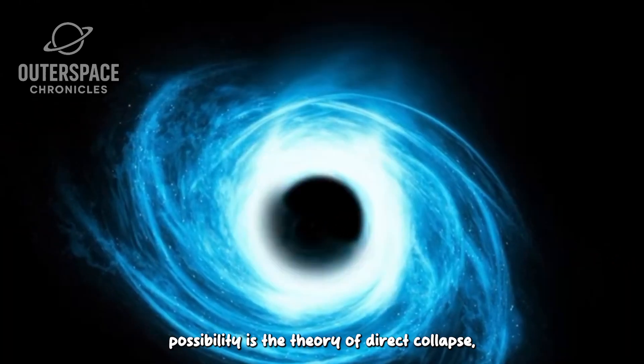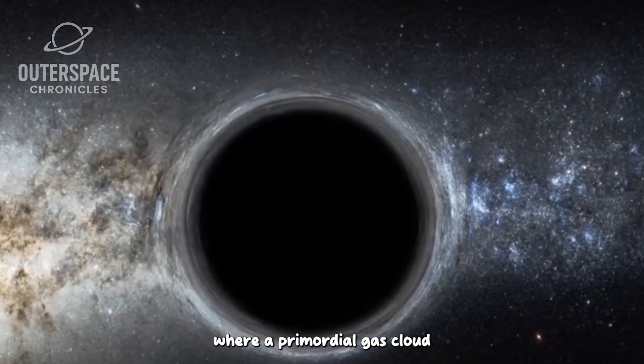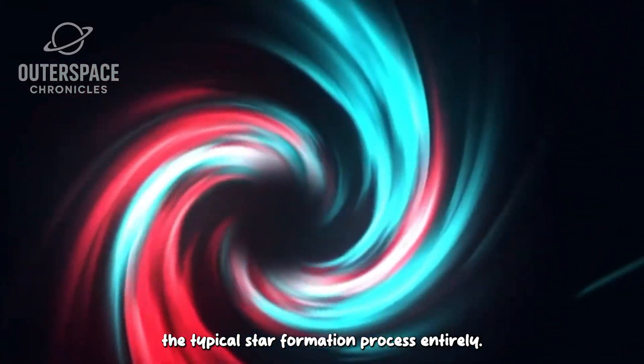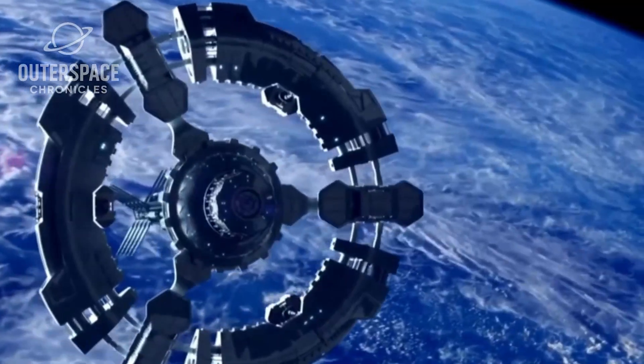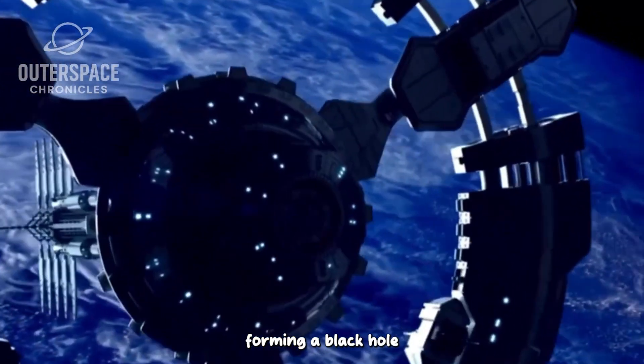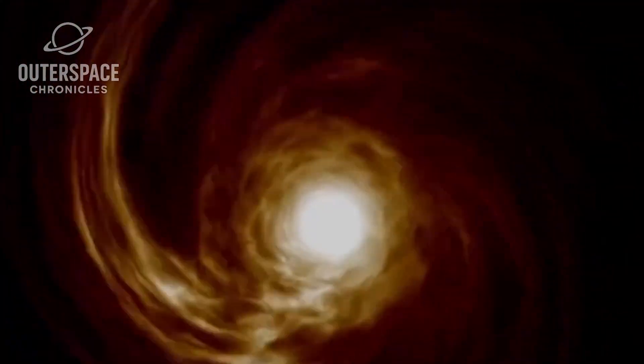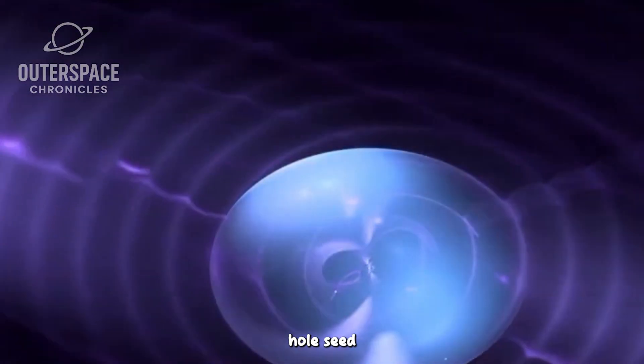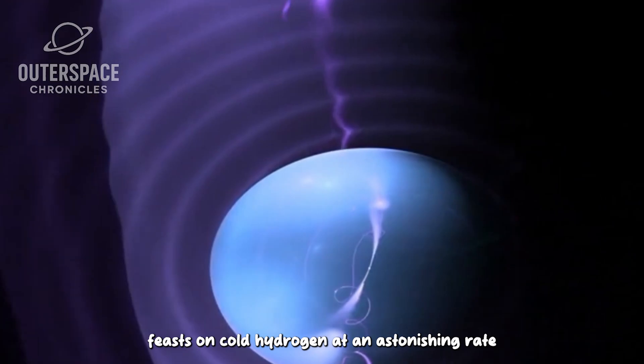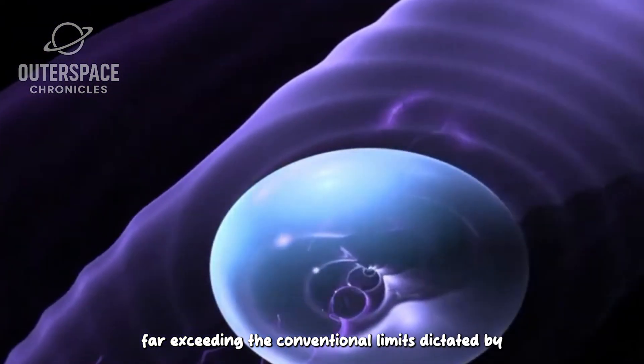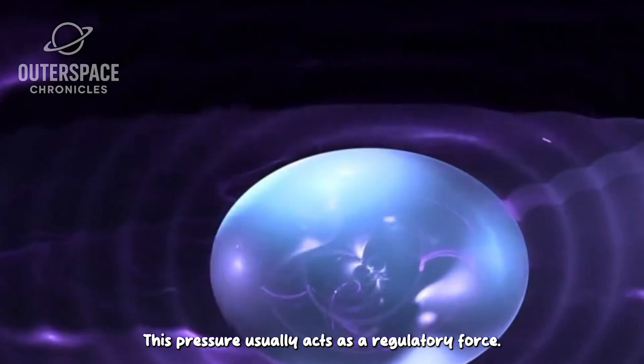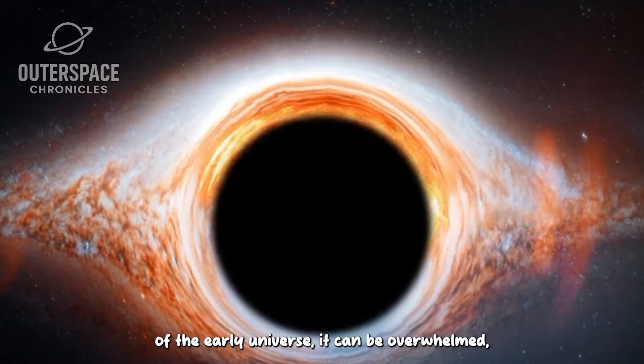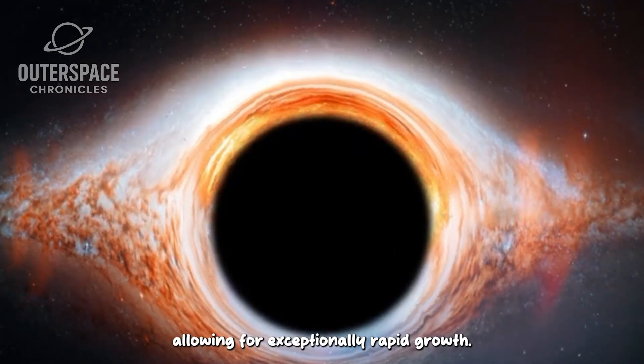One intriguing possibility is the theory of direct collapse, where a primordial gas cloud, with a staggering mass of around 10 million suns, bypasses the typical star formation process entirely. Instead, it quickly collapses under its own gravity, forming a black hole seed in a singular, rapid event. Alternatively, there's the concept of super-Eddington accretion, where a smaller black hole seed feasts on cold hydrogen at an astonishing rate, far exceeding the conventional limits dictated by radiation pressure. This pressure usually acts as a regulatory force, but in the dense and tumultuous environment of the early universe, it can be overwhelmed, allowing for exceptionally rapid growth.